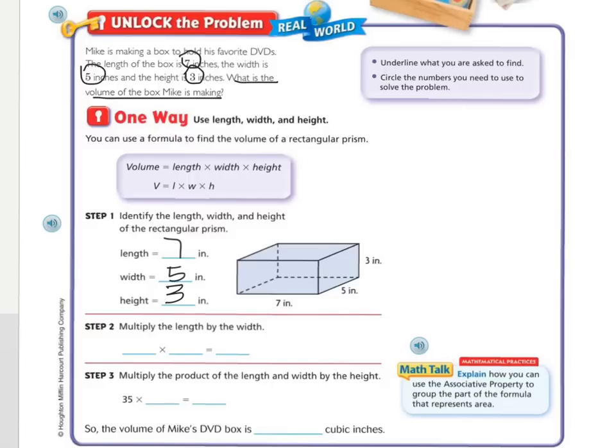Let's look at multiplying the length by width. So the length is 7 inches and the width is 5 inches. So I'm going to say 7 times 5 is 35. Now we're going to multiply the product of the length and the width by the height. So that's 35, and then the height was 3 inches.